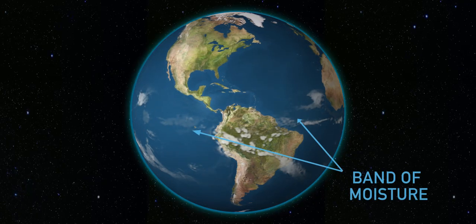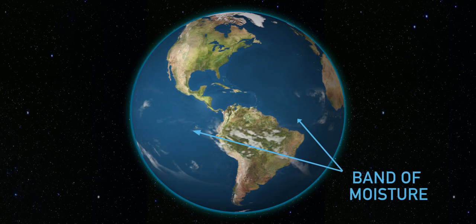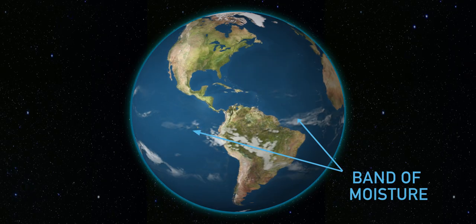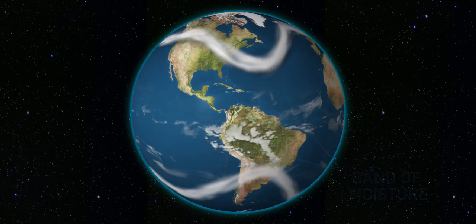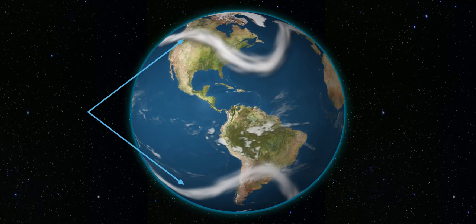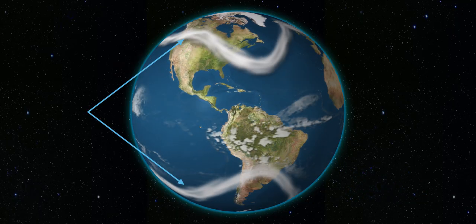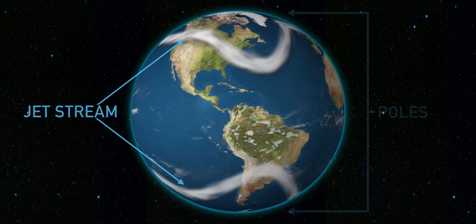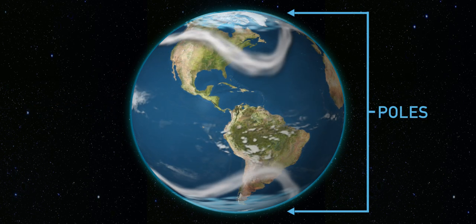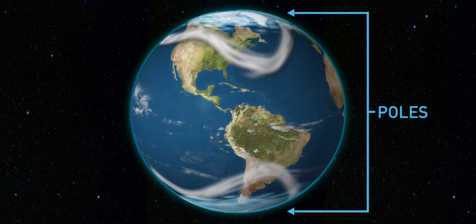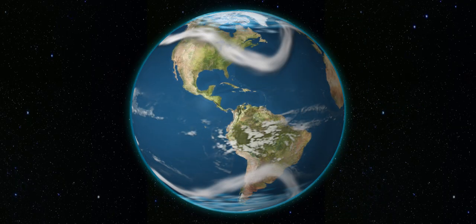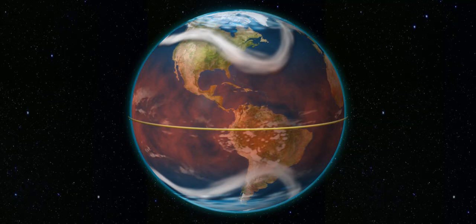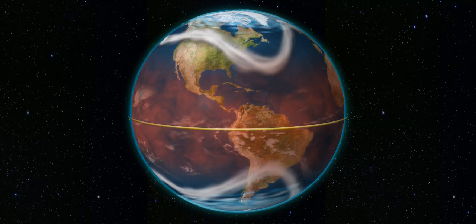We have this band of moisture moving around the equator, and as you can see, the motion is generally moving east to west. Then we have this band of moisture moving from west to east in both the northern and southern hemispheres, and this is called the jet stream. Then we have the poles that are roughly circulating east to west around the top and bottom of the planet.